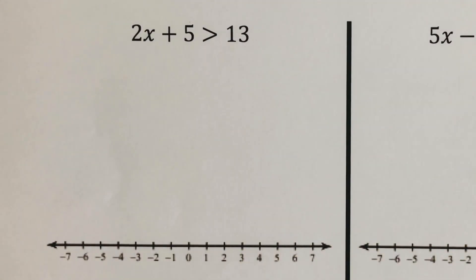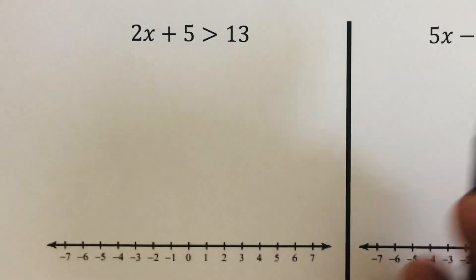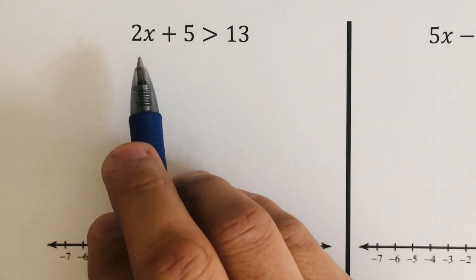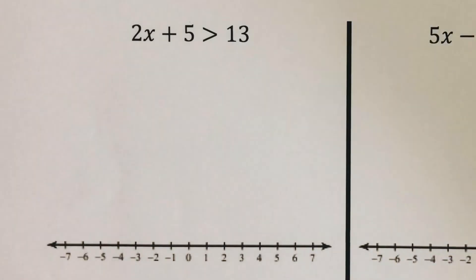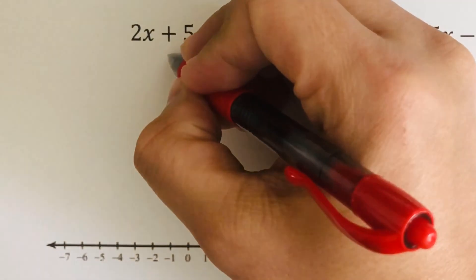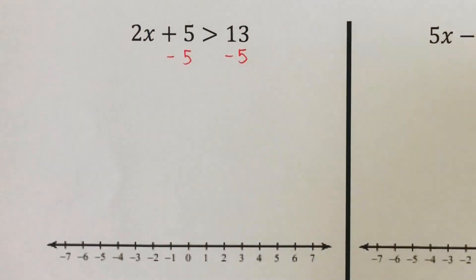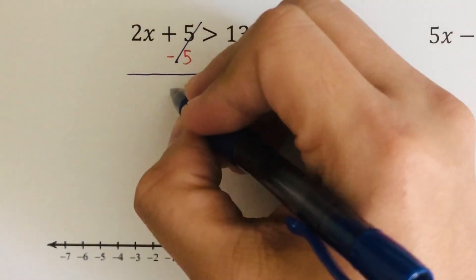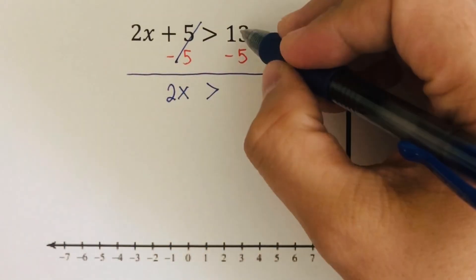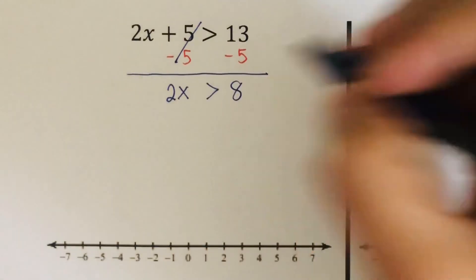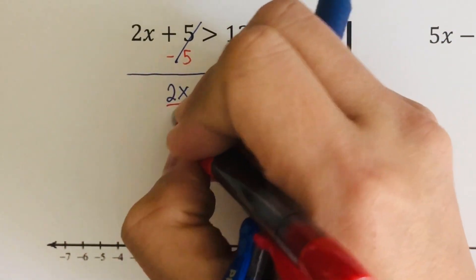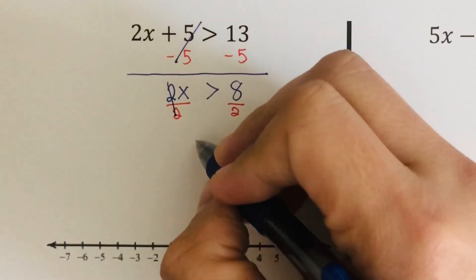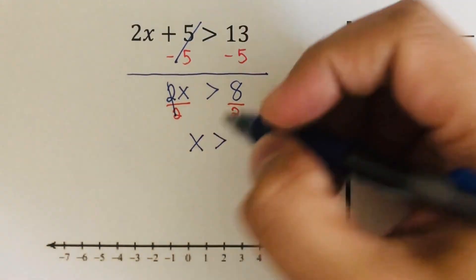So we are supposed to determine the solution to this inequality both in interval notation and graphing form. That's 2x plus 5 is greater than 13. What we're going to do is clear the left side — we need to have only x left by itself on the left side. We are going to subtract 5 from both sides, so we rewrite this as 2x is greater than 13 minus 5, which is 8. Then we divide both sides by 2, and we are left with x is greater than 4.